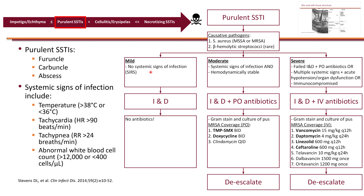We assess the severity of purulent infections as mild, moderate, or severe based on the presence or absence of SIRS criteria. If there are no systemic signs of infection — mild disease — all you need is incision and drainage as a source control strategy. Once the pus is removed, patients will recover, and there is no need for antibiotics.